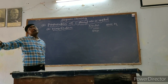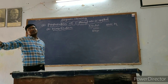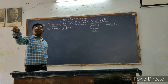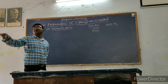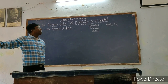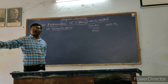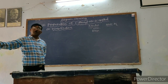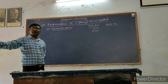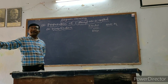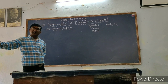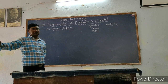Sometimes reactions get the name of the product which is formed in that reaction. For example, in the iodoform reaction, the product is iodoform. Similarly, in diazotization, diazonium salts are the products.